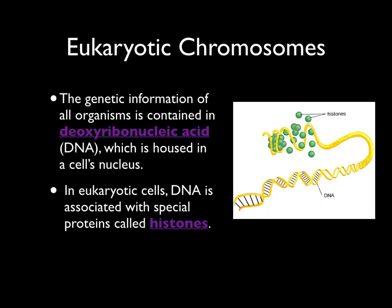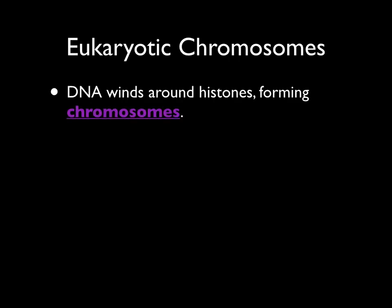The figure here shows the relationship between histone proteins and DNA. Those histone proteins are small spherical proteins that take the DNA and wind it around them. DNA winds around histone proteins, and as those histones wind the DNA around them, that DNA condenses to form the chromosome.